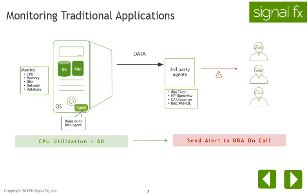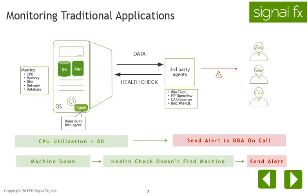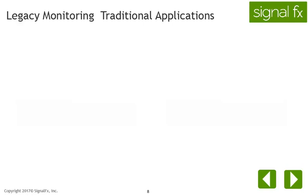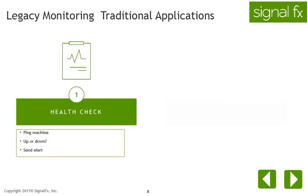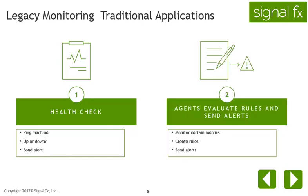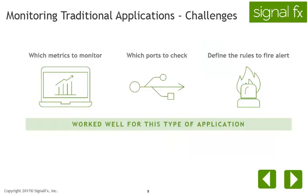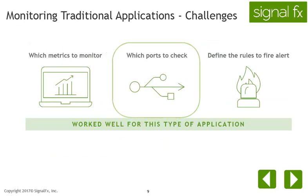So something was used to check the health of the system, and this was done by pinging the machine. To summarize, legacy monitoring of traditional applications consisted of: a health check that pinged the machine to see if it was up or down, and a third-party agent that monitored certain metrics to which you added rules to send alerts. The challenge was to figure out which metrics to monitor, which ports to check, and to define the rules to fire alerts.